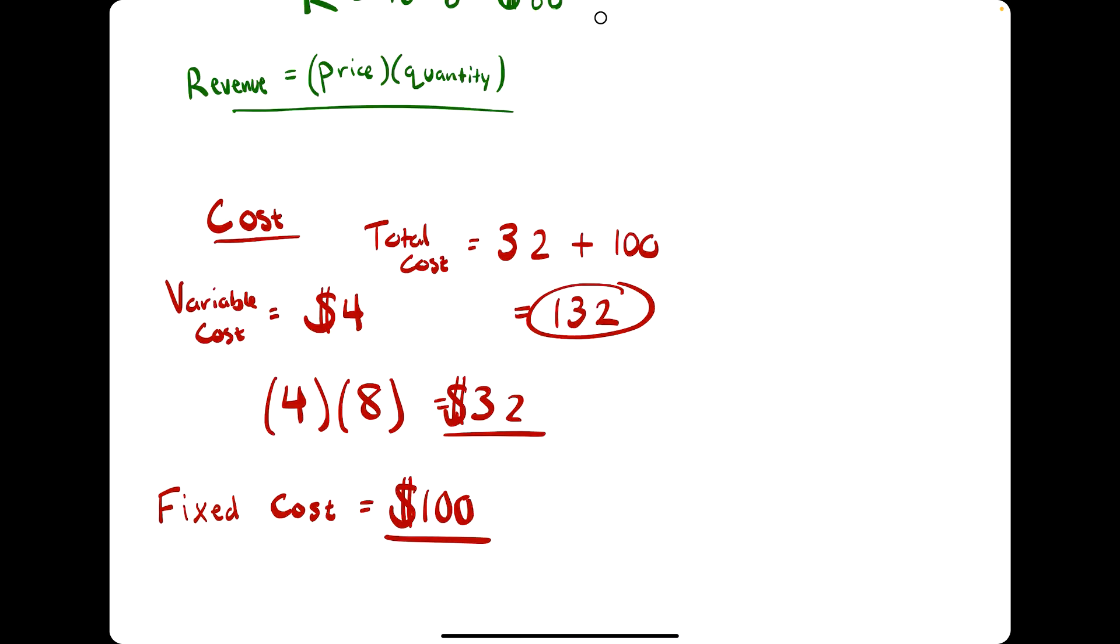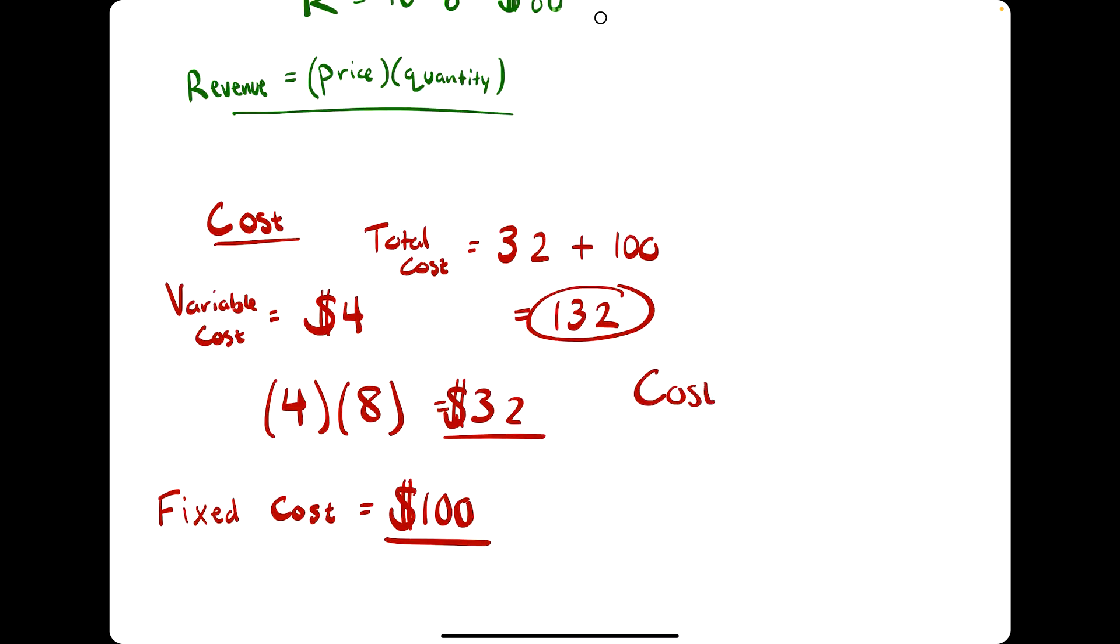But at least the good thing is you just derived the cost formula. The cost formula says that cost equals variable cost times quantity plus the fixed costs.